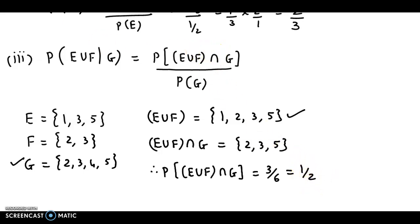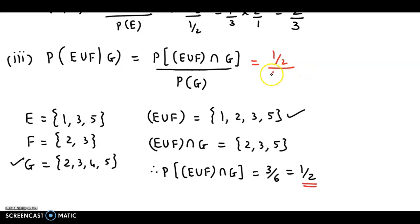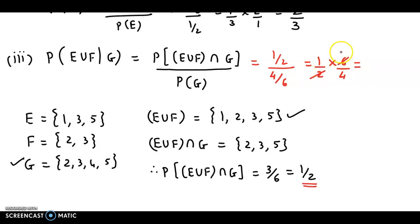We substitute this into the formula. The numerator probability is 1/2 and probability of G is 4/6. Simplifying: 1/2 × 6/4 = 6/8 = 3/4. So probability of E union F given G is 3/4.